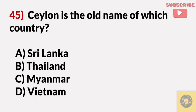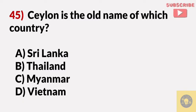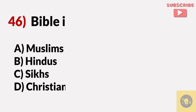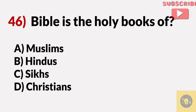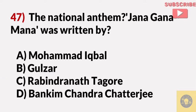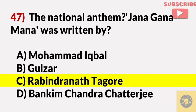Ceylon is the old name of which country? Answer A, Sri Lanka. The Bible is the holy book of? Answer D, Christians. The national anthem Jana Gana Mana was written by? Answer C, Rabindranath Tagore.